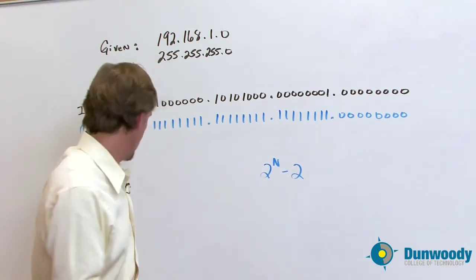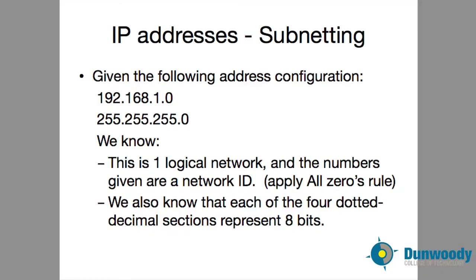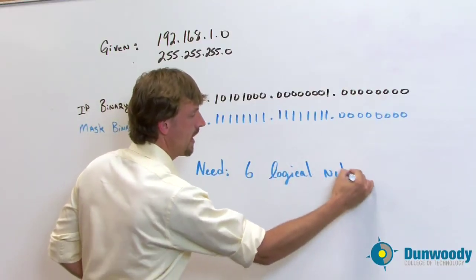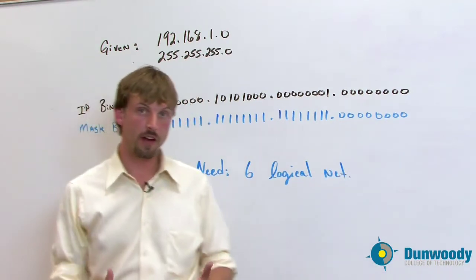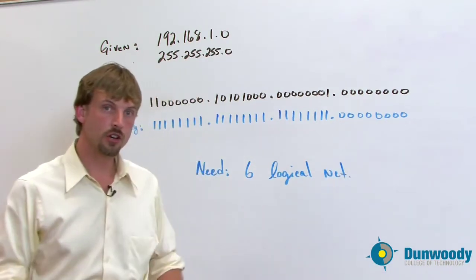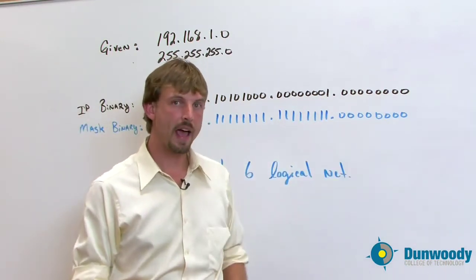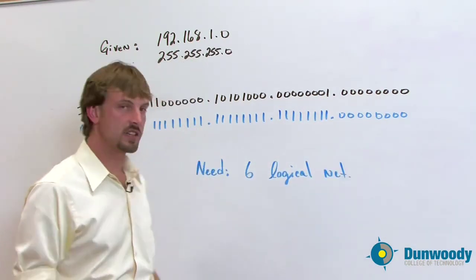Now what we're going to do is we're going to take this address space that we've been given and we're going to divide it into six logical networks. So the need here, we need six logical networks. And what we have to do is figure out through our formula that I just showed you how many bits we got to move into the host section to make that happen. So here's how that sets up.